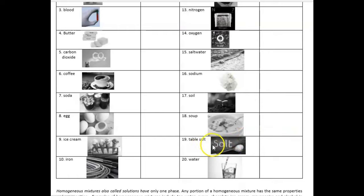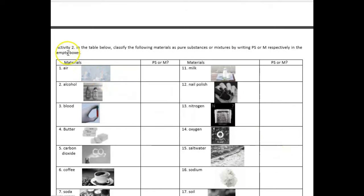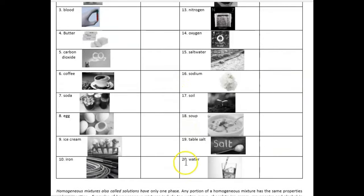Last one. Table salt. So, this is an example of compound. So, if this is a compound, our answer is P, S, pure substance. Okay? Got it? So, for activity number 2, all you have to do is to write P, S, or M. This is only 20 items.